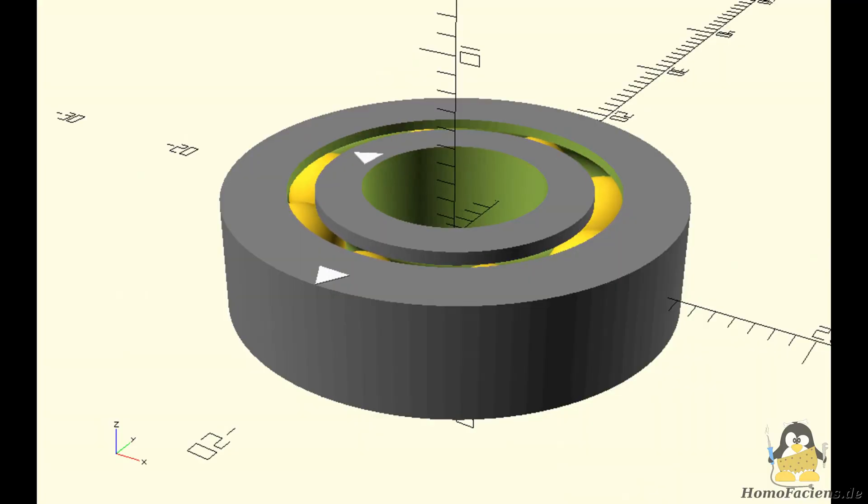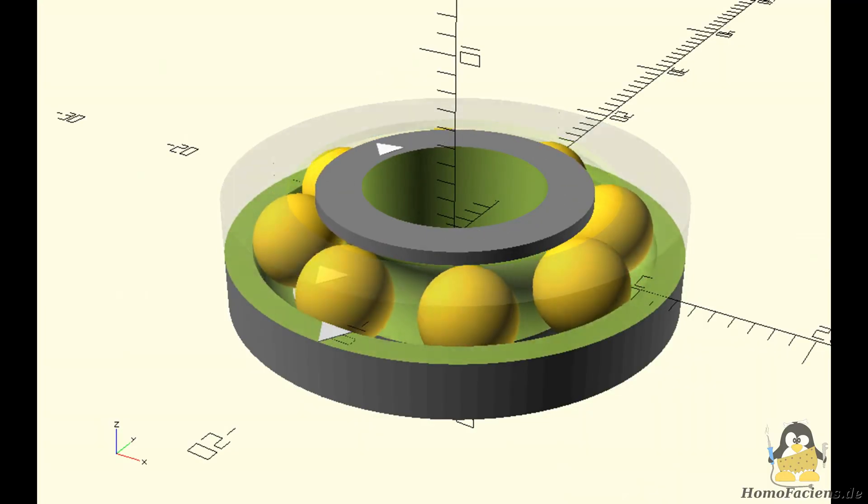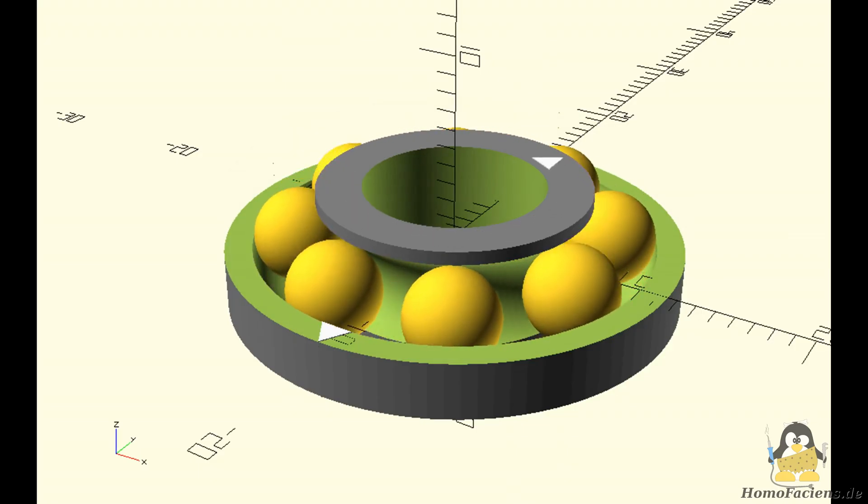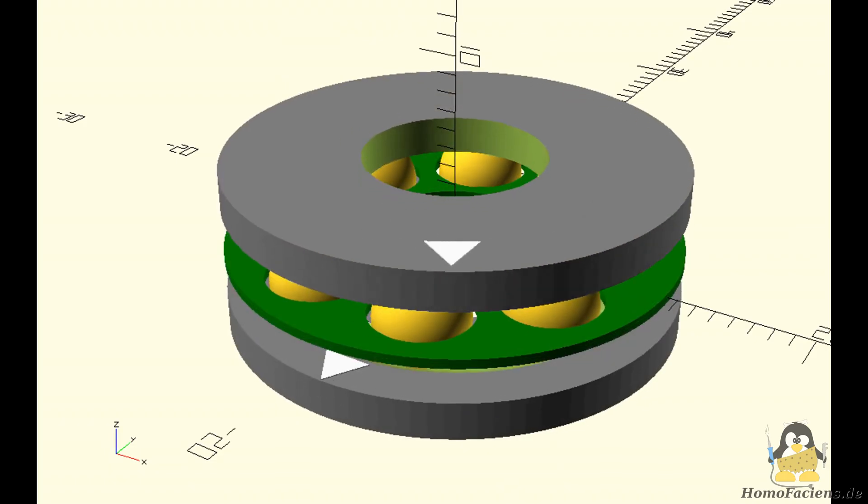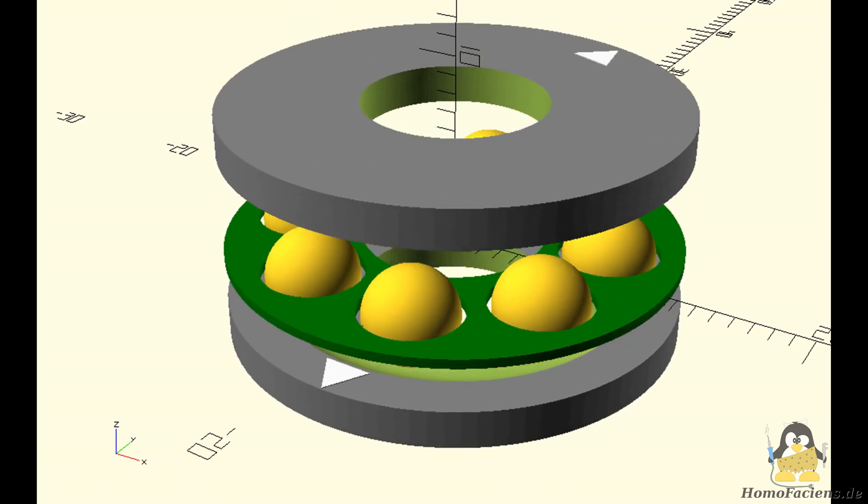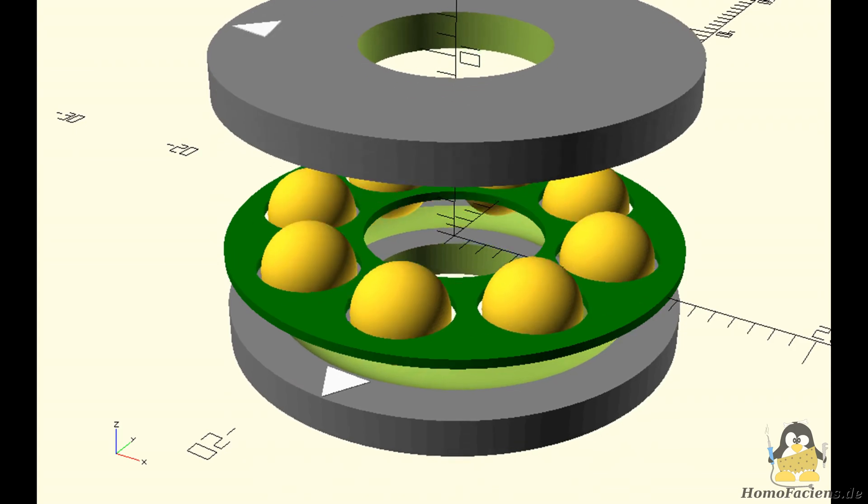The central element on which the forces act is the ball bearing. Standard ball bearings are primarily designed for forces in the radial direction. However, there are so called thrust bearings that are designed for forces in the axial direction.